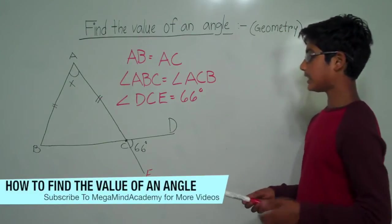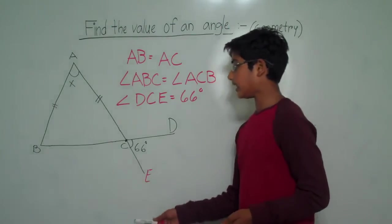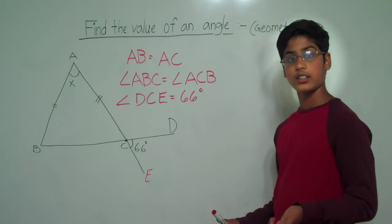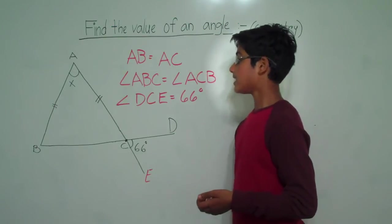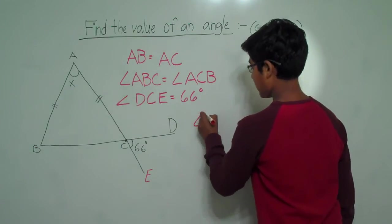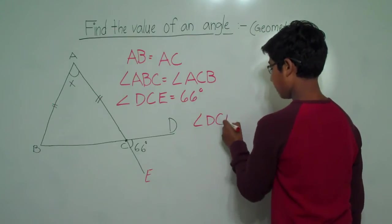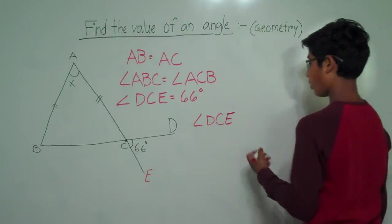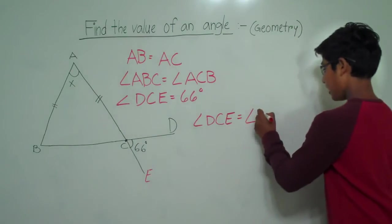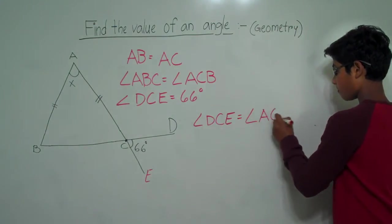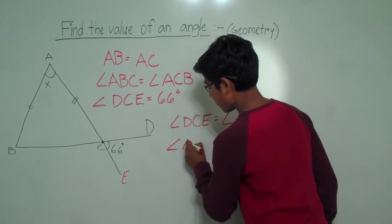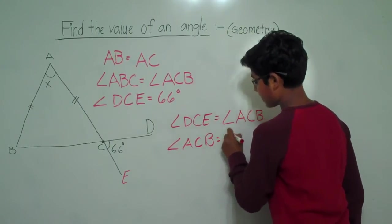Now, we can see in this diagram that angle DCE and angle ACB are opposite or vertical angles. So this means that angle DCE is equal to angle ACB. Let's write that down: angle DCE is equal to angle ACB. This means that angle ACB is equal to 66 degrees.